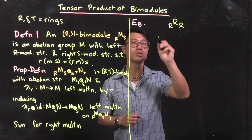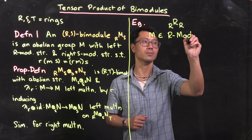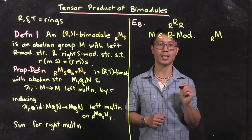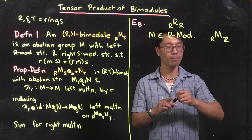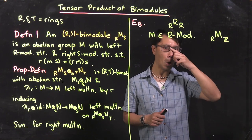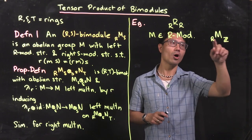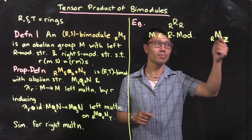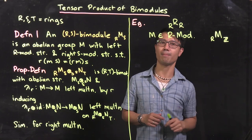Another example: suppose M is a left R module. Any abelian group also has a structure of a Z module, because to multiply by an integer n you just add n copies of the element together, or take the negative for negative integers. Taking a multiple of an element — multiplying on the right — commutes with left multiplication by any ring element. So this gives M the structure of an R,Z-bimodule.